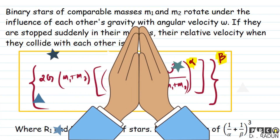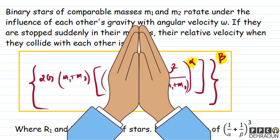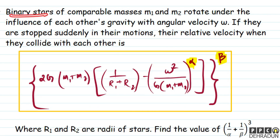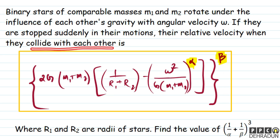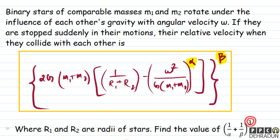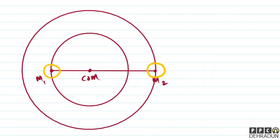Welcome students, let's look at this problem. Binary stars of comparable masses m1 and m2 rotate under the influence of each other's gravity with angular velocity omega. If they are stopped suddenly in their motions, their relative velocity when they collide with each other is to be found, where r1 and r2 are radii of stars. Find the value of (1/α + 1/β) to the power 3.